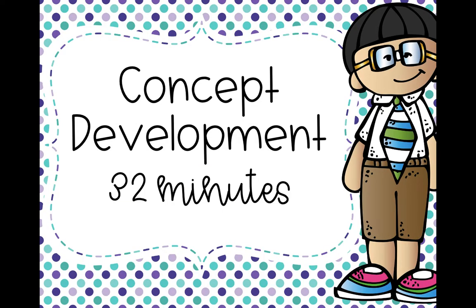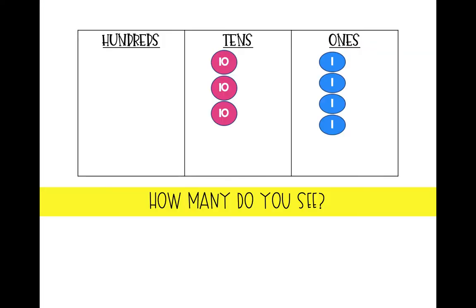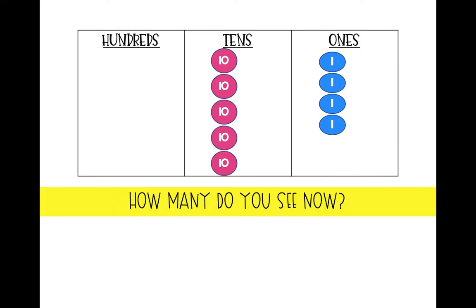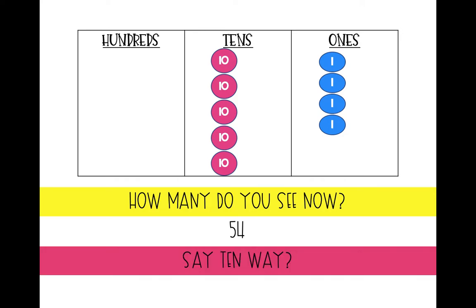Let's go ahead and begin our lesson. Great job reviewing, friends. How many do you see on this place value chart? We see 34. What is the say ten way of 34? If we remember from a few weeks ago, the say ten way is 3 tens 4. How many do you see now? 54. What about the say ten way? Very good — 5 tens 4.